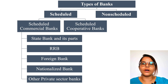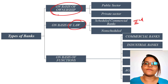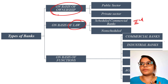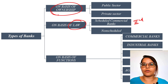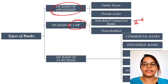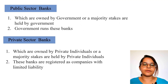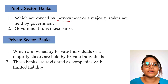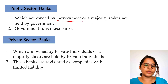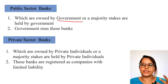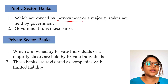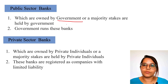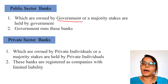On the basis of ownership, we have public sector banks and private sector banks. Private banks, as the name suggests, are owned by private companies or private organizations. Public sector banks are owned by the government, or the majority of their shares are held by the government. The basic objective of public banks is to serve people and provide good financial resources, with the government having full authority and responsibility over banking activities.